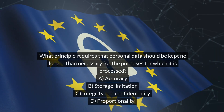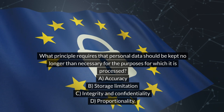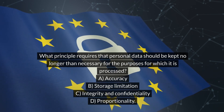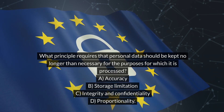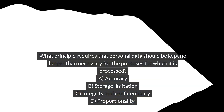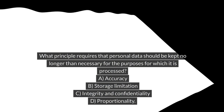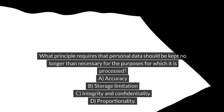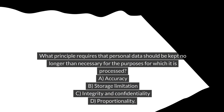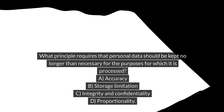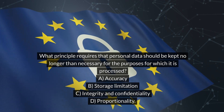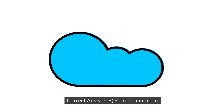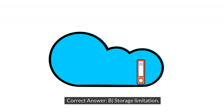What principle requires that personal data should be kept no longer than necessary for the purposes for which it is processed? A. Accuracy. B. Storage limitation. C. Integrity and confidentiality. D. Proportionality. Correct answer: B. Storage limitation.